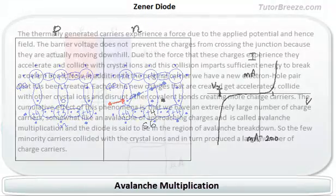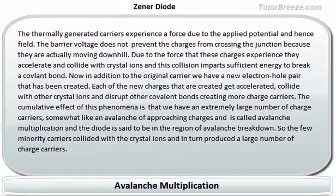So, you can see that the few minority carriers collided with the crystal ions and in turn produced a very large number of charge carriers which results in a large current. Now, this was one mechanism by which charges were produced.